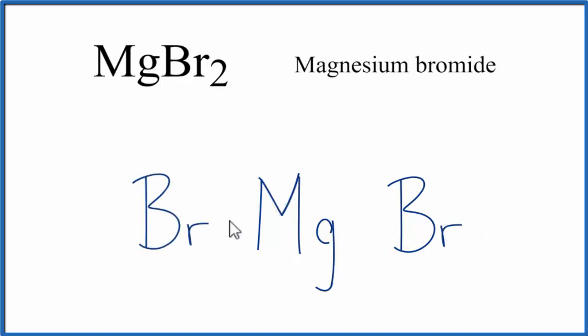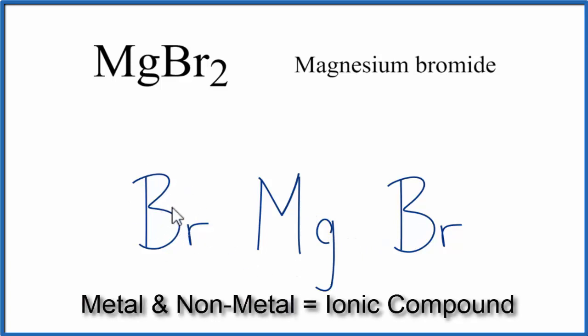Magnesium is a metal, and bromine is a non-metal. So when we have a metal attached to non-metals, that's an ionic compound.